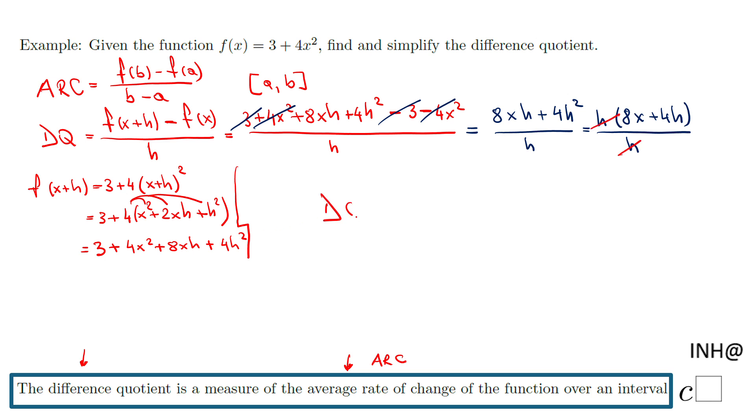So we have the final form here: the difference quotient of this expression is 8x plus 4h. This is a very good thing to learn, especially if you need to take more math classes like calculus where you do the derivative using this difference quotient.